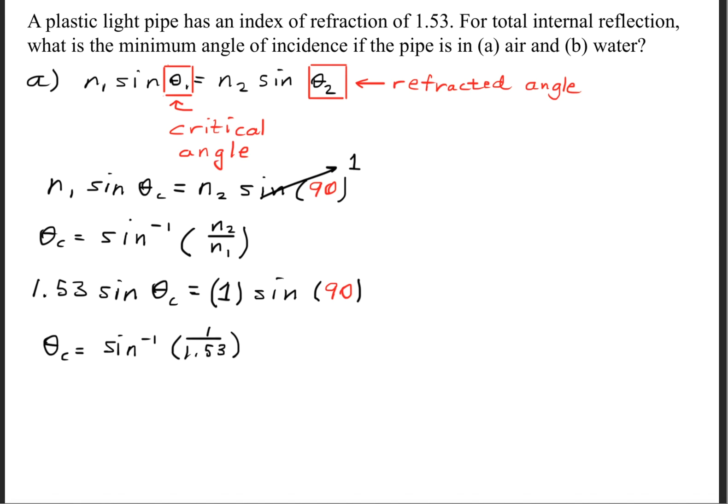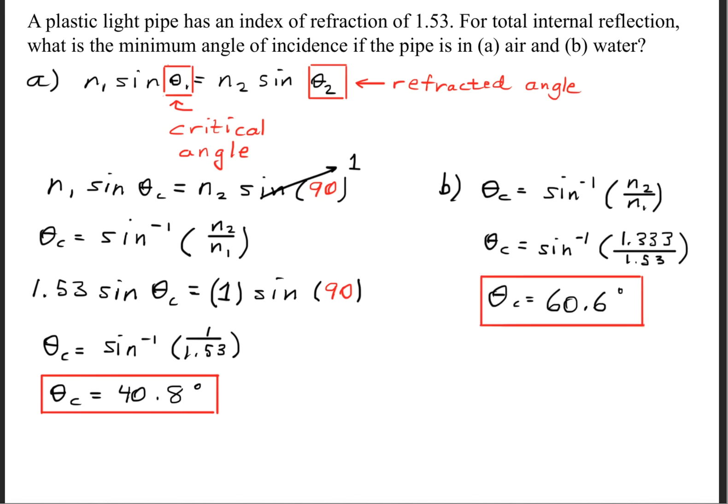When we solve for the critical angle, we'll have the inverse sine of 1 divided by 1.53, and we'll get a critical angle of 40.8 degrees. So 40.8 degrees is the minimum angle for this to internally reflect. For part B, we'll do the same thing and get a critical angle of 60.6 degrees.